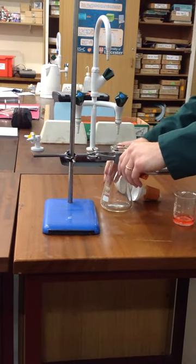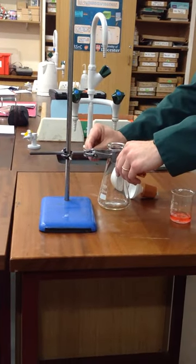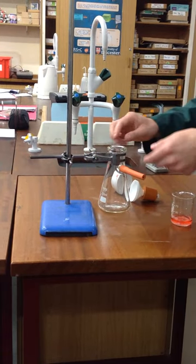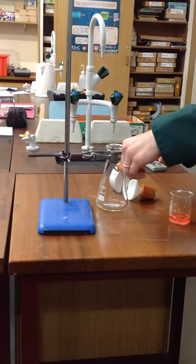So what we need here is what's called a Buchner flask, which is basically just a glass flask with a sidearm and a little tube coming off it.